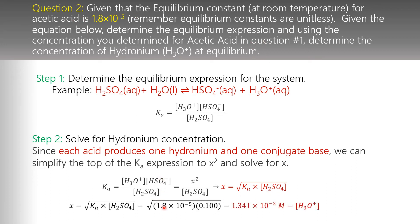We input our values: using Kₐ = 1.8 × 10⁻⁵ and the concentration of H₂SO₄ = 0.100, we get a hydronium concentration of 1.341 × 10⁻³ molar. That's also the concentration of HSO₄⁻. For your lab, this value will be the concentration of acetic acid you determined in question one — don't just copy this down, use your own answer.